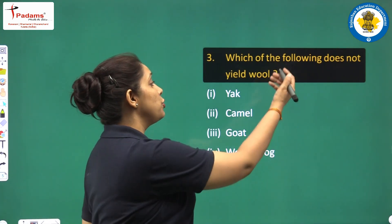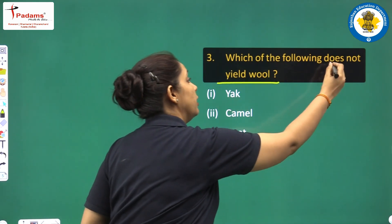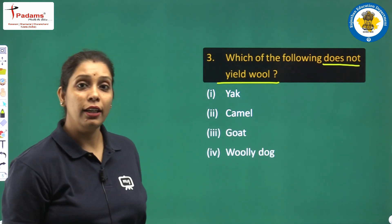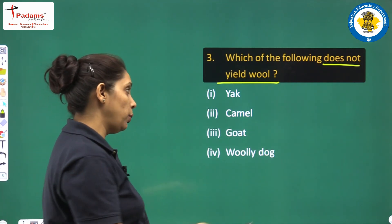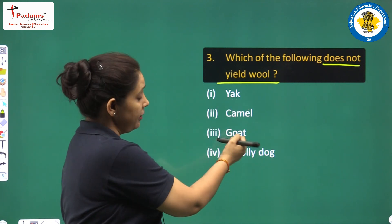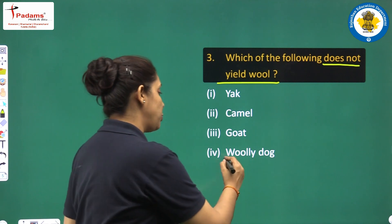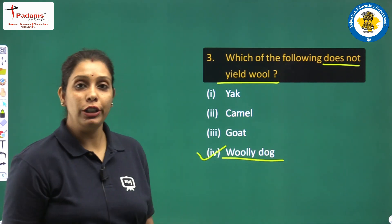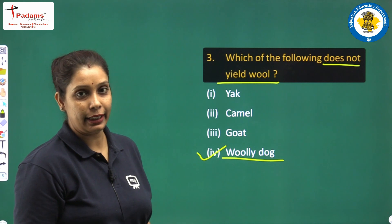Next question: which of the following does not yield wool? The options are yak, camel, goat, and wooly dog. Wooly dog does not give us wool. That is the right answer — wooly dog.